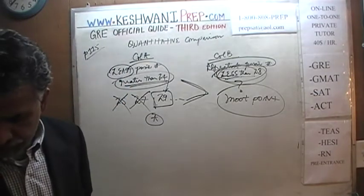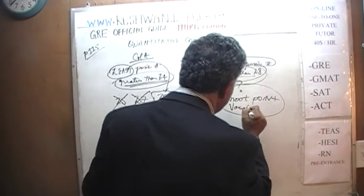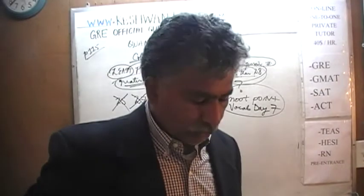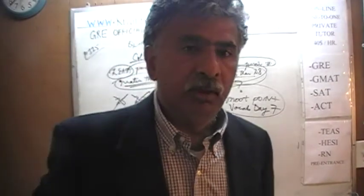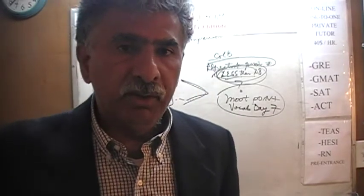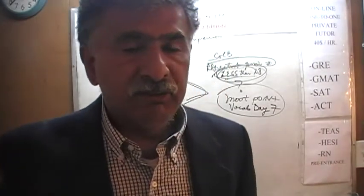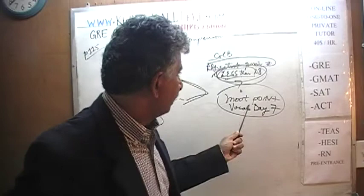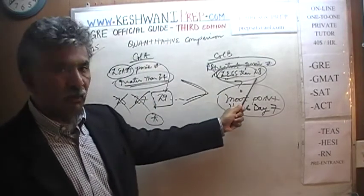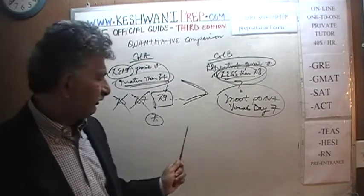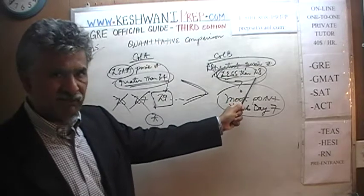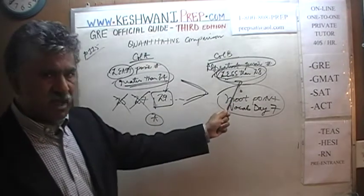If you want to learn the vocab word I just used — 'moot point' — we learned it already in Vocabulary Day 7. A moot point is something you can discuss for theoretical purposes only; it has no practical implication. We could have asked what the greatest prime number less than 28 is, and we could have found it, but it would have had no bearing on the answer. Whatever that number is, it's less than 28, and 29 is going to be more than that. The answer is A.